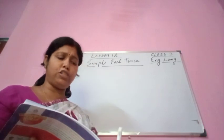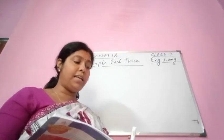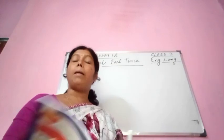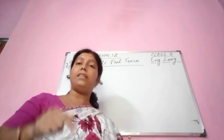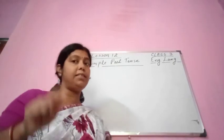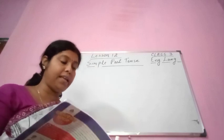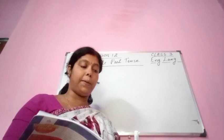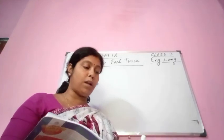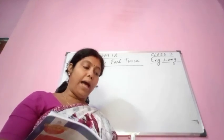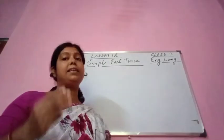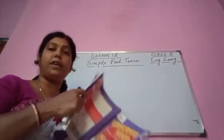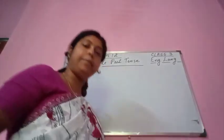'Nikhil caught five fish in the nearby lake.' See the verb — 'caught'. The past tense of 'catch' is 'caught', so this sentence is in the past tense. So number one, number four, and number six — these three sentences are in the past tense.